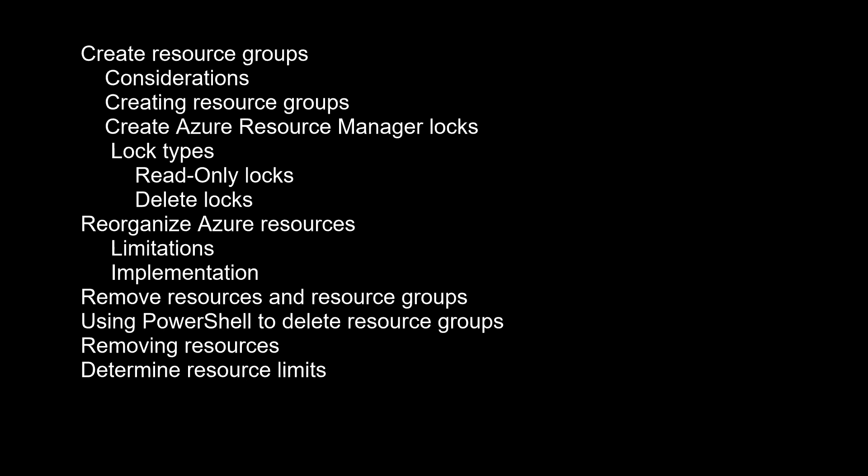Considerations. Resource groups are at their simplest a logical collection of resources. There are a few rules: resources can only exist in one resource group, resource groups cannot be renamed, resource groups can have resources of many different types, and resource groups can have resources from many different regions. All the resources in your group should share the same lifecycle — you deploy, update, and delete them together. If one resource, such as a database server, needs to exist on a different deployment cycle, it should be in another resource group. You can add or remove a resource to a resource group at any time, and you can move a resource from one resource group to another, though limitations do apply. A resource group can contain resources that reside in different regions and can be used to scope access control for administrative actions. A resource can also interact with resources in other resource groups, which is common when two resources are related but don't share the same lifecycle.